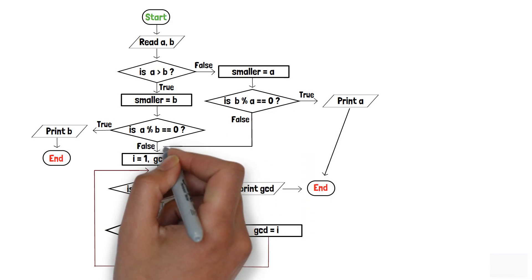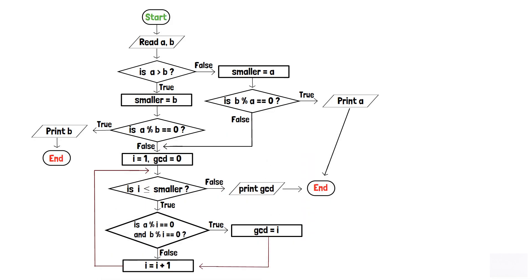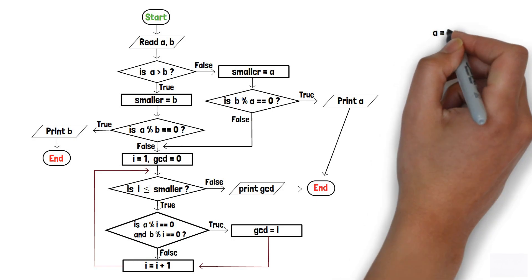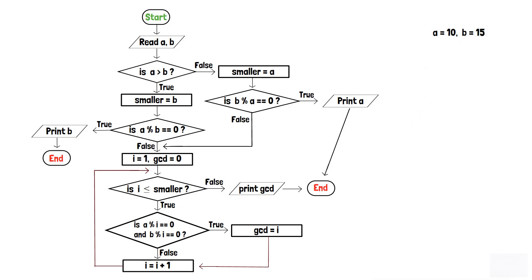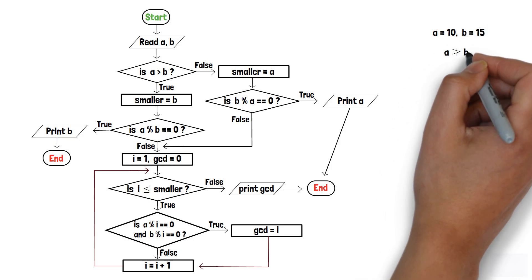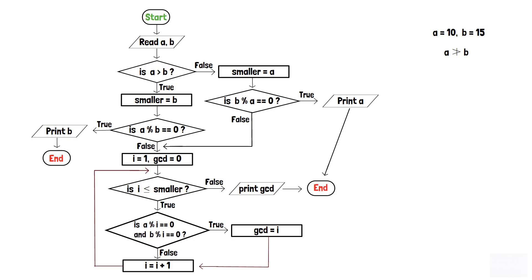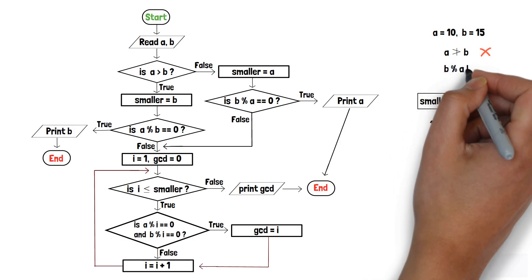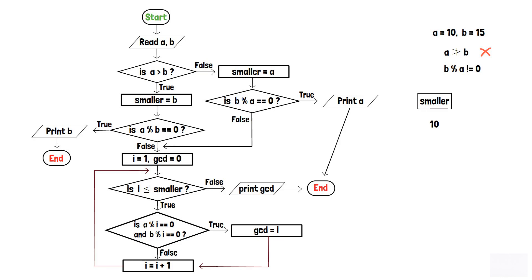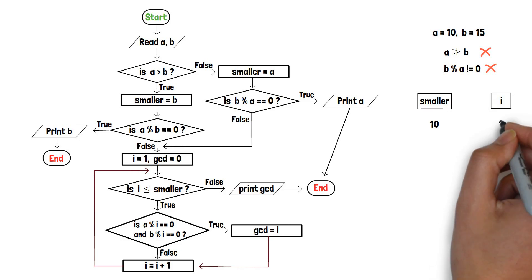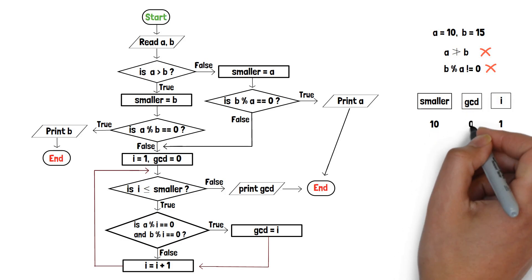To understand the flowchart better, let's consider a = 10 and b = 15. Since 10 is not greater than 15, the condition inside the first decision box is false, so a (which is 10) is assigned to variable smaller. Now 15 modulo 10 is not equal to 0, so the condition inside the second decision box is false. The initial value of variable i is 1 and variable gcd is 0.